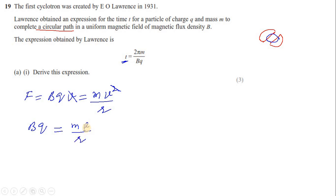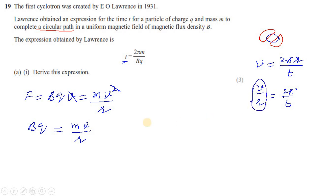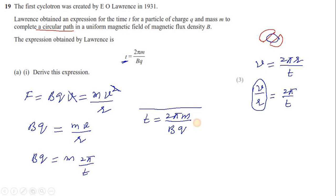We need to eliminate v and r from the equation. For circular motion, velocity v = 2πr/T, so v/r = 2π/T. Substituting into BQ/m = v/r: BQ = m × 2π/T. Rearranging gives T = 2πm/BQ. This is the required expression.